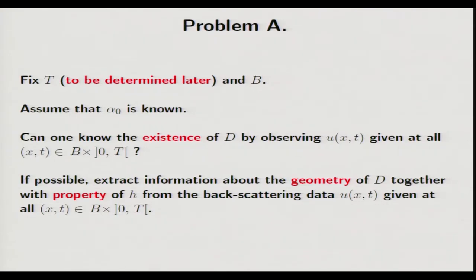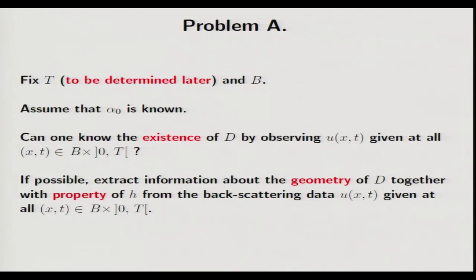Problem A: Fix T to be determined later, and fix B. Assume that α₀ is known. The question is: can one know the existence of D by observing u(x,T) given at all x in B for all T? This is the first question. And if possible, can one extract information about the geometry of D, together with the property of H — for example, whether H is positive or negative — from the backscattering data u(x,T) given at all x in B? Under the condition that T and B are fixed, what information can one extract from the data? If this is possible, then moving B a little bit, we can obtain more detailed information.